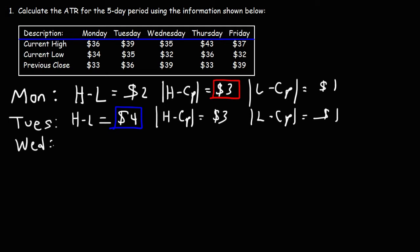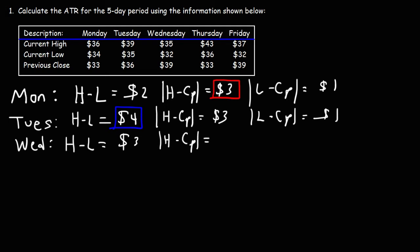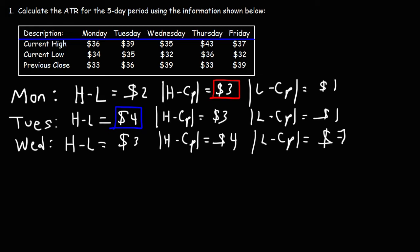Now let's move on to Wednesday. H minus L is 35 minus 32, which is $3. H minus the previous close is 35 minus 39, which is negative 4 — we take the absolute value, so positive 4. The current low minus the previous close is 32 minus 39, which is negative 7, but we take positive 7. So the highest value for Wednesday, the greatest difference, is 7.